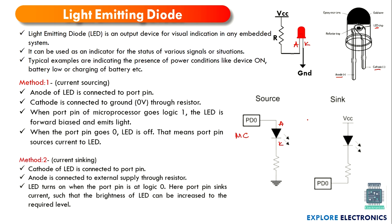In the current sinking method, the anode is already connected to VCC and the cathode is connected to the port of the microcontroller. Whenever this port has a value of 0, the LED will be turned on, because VCC is responsible for current flow through the diode and that current flows to the microcontroller port — the port acts as current sinking, consuming the current. If we pass 1 from the port, the diode becomes reverse biased and the LED will be off. These are the two methods of current sourcing and current sinking to connect an LED to a microcontroller port.